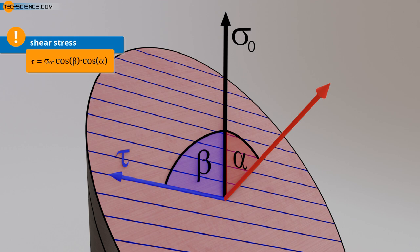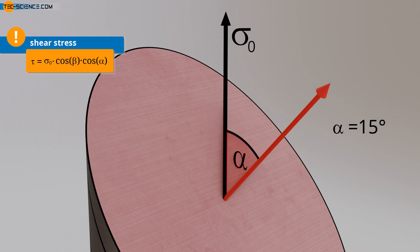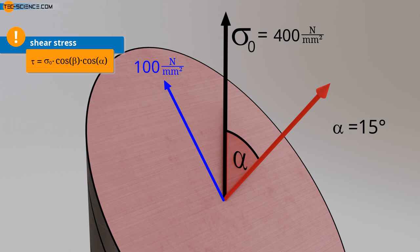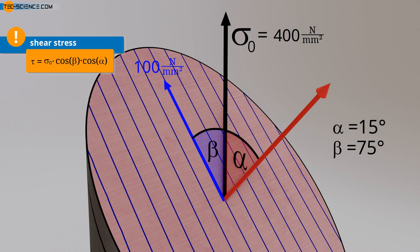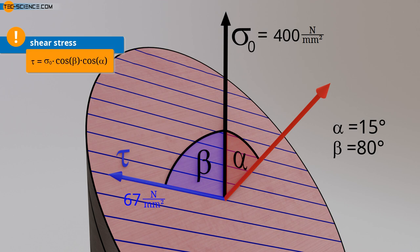The difference between the shear stress in a slip plane and the resolved shear stress in slip direction is illustrated with a numerical example. A slip plane is considered which is inclined by angle alpha equal to 15 degrees. If a normal stress of 400 N per square millimeter is applied, a shear stress of 100 N per square millimeter acts in the slip plane. If the slip direction were oriented at angle beta equal to 75 degrees to the tensile axis, the 100 N per square millimeter would also correspond to the shear stress in slip direction. However, if the slip direction is oriented at angle beta equal to 80 degrees to the tensile axis, only a shear stress of 67 N per square millimeter acts in the slip direction. It is this shear stress resolved in slip direction that is relevant for slipping, not the 100 N per square millimeter acting in the slip plane.